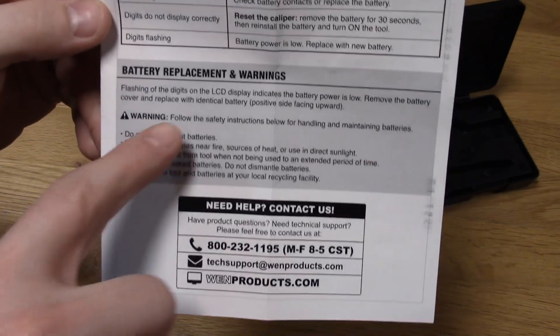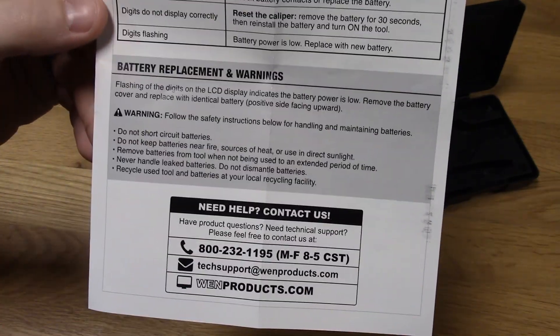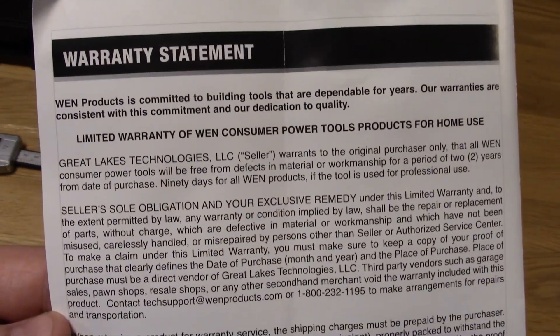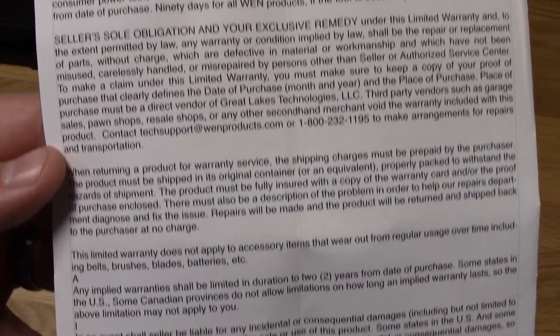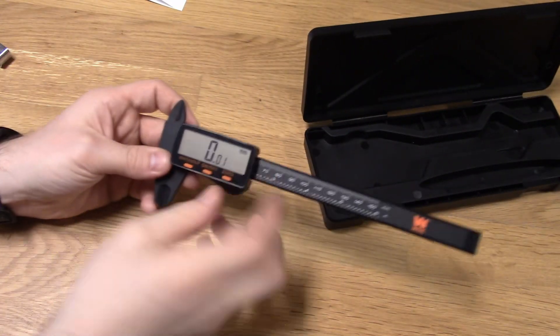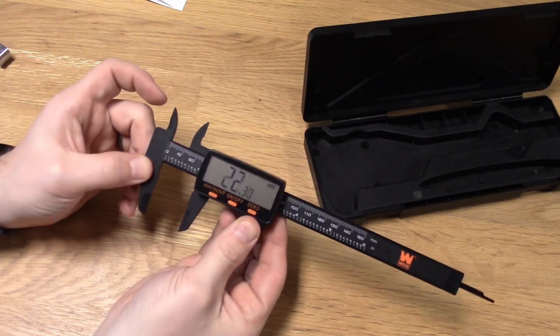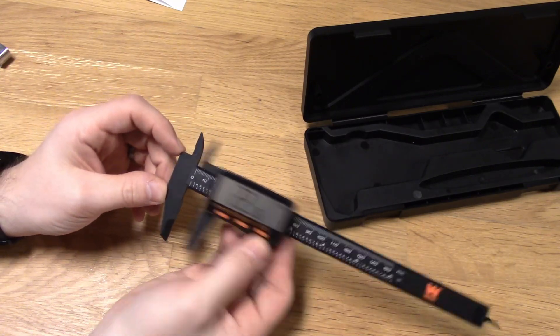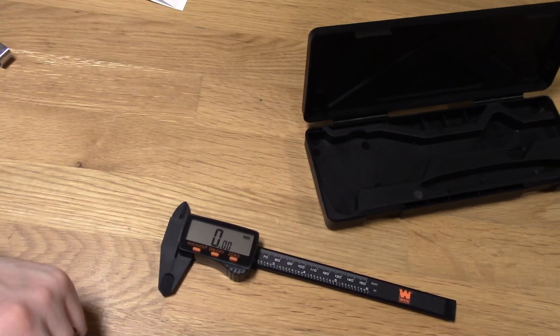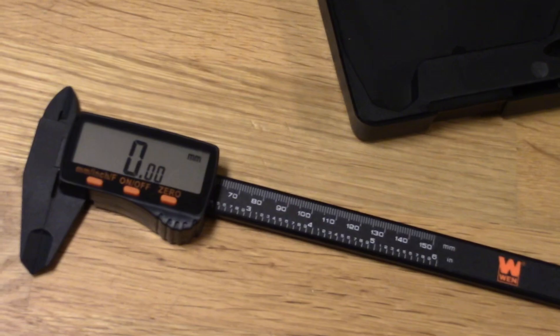One thing to note is that if the display is flashing, that means your battery is low. And here's the warranty statement, which basically says that it's covered under warranty for two years. And I'm kind of curious if this will auto power off after any amount of time. So I am going to set this here and see how long before it powers off.